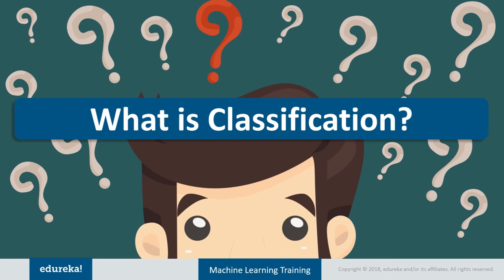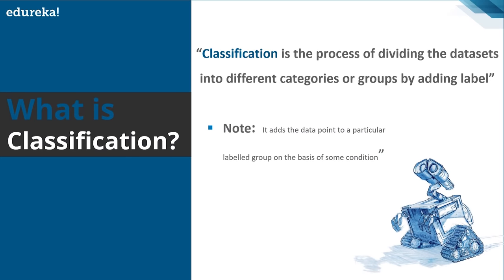Let's start with what is classification. Consider Gmail — how does it classify mail as spam or not spam? That's nothing but classification. Classification is the process of dividing a dataset into different categories or groups by adding labels. You take the data, analyze it, and on the basis of some condition, divide it into various categories to perform predictive analysis. These algorithms handle questions like: does this data belong to category A or category B, such as is this male or female?